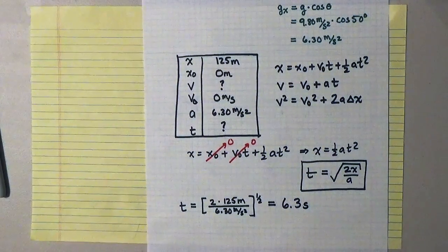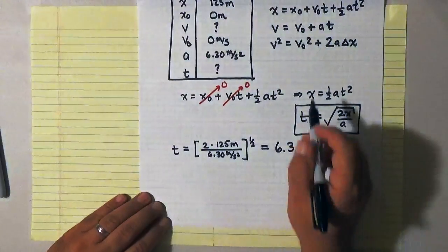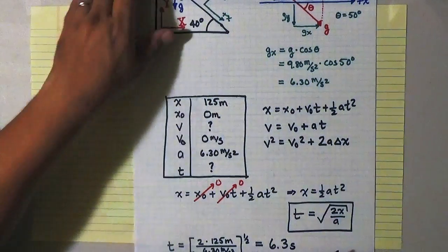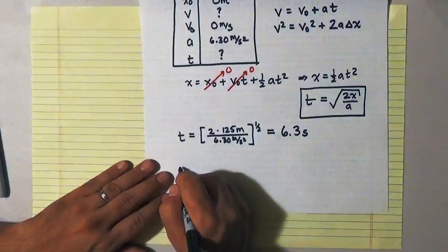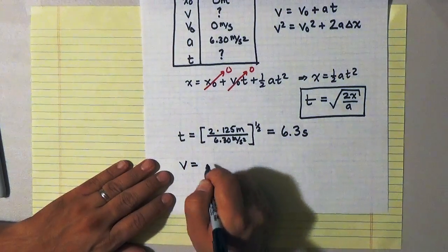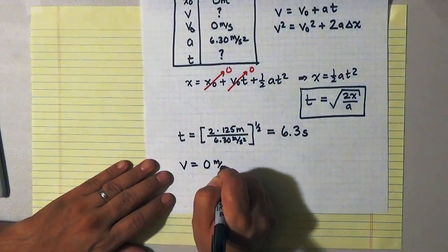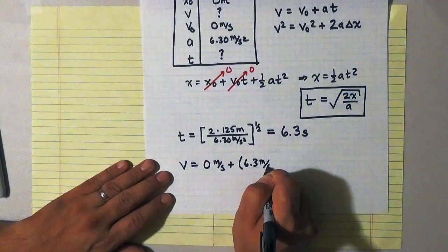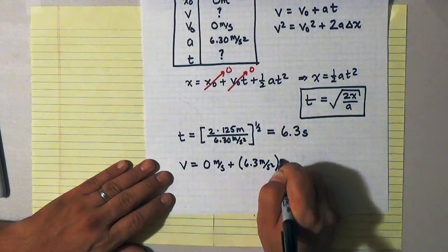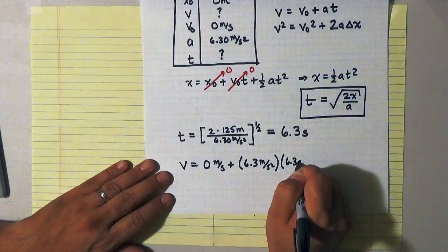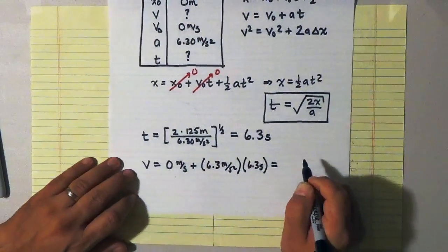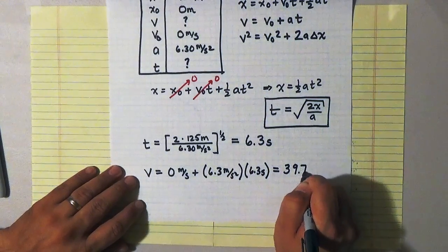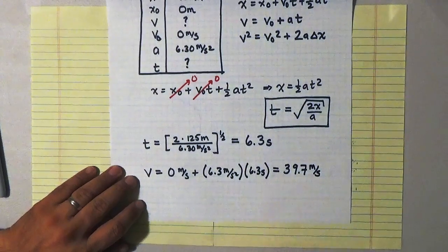And so now that I know the time, I can then use the second kinematic equation, v is equal to v_0 plus at to find my final speed. So v is equal to v_0, which is 0 meters per second, plus my acceleration, which is 6.3 meters per second per second, times my time, which is 6.3 seconds. And if I multiply that out, I find that my speed at the bottom of the bobsled run is 39.7 meters per second.